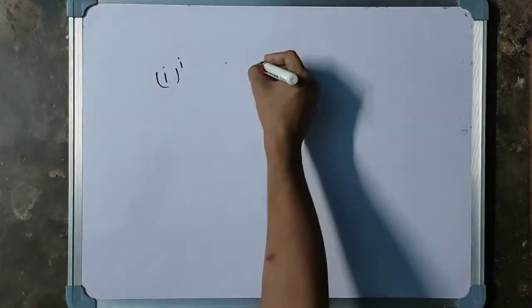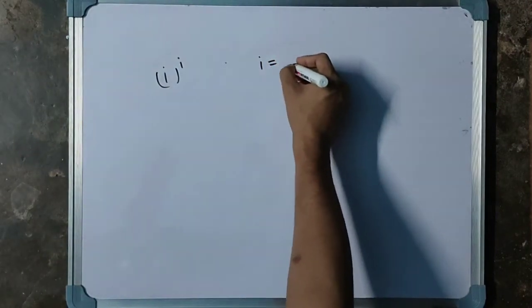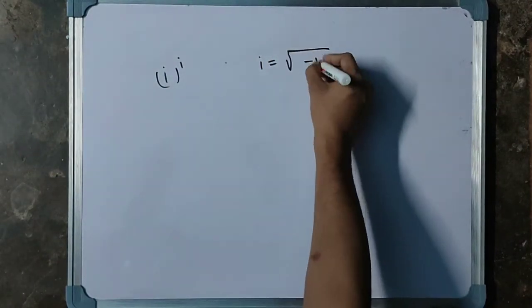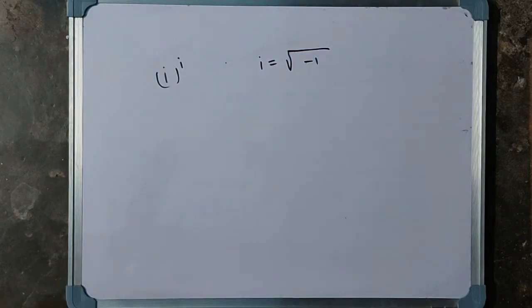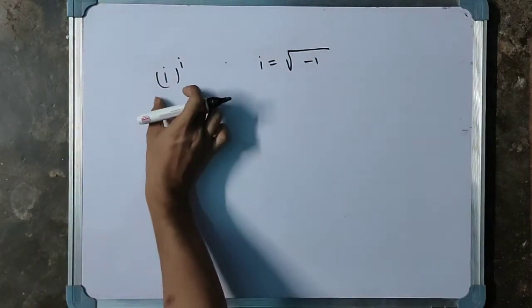First of all, what is i? We already know that i equals root minus 1. Now, let us see how we can find this value.